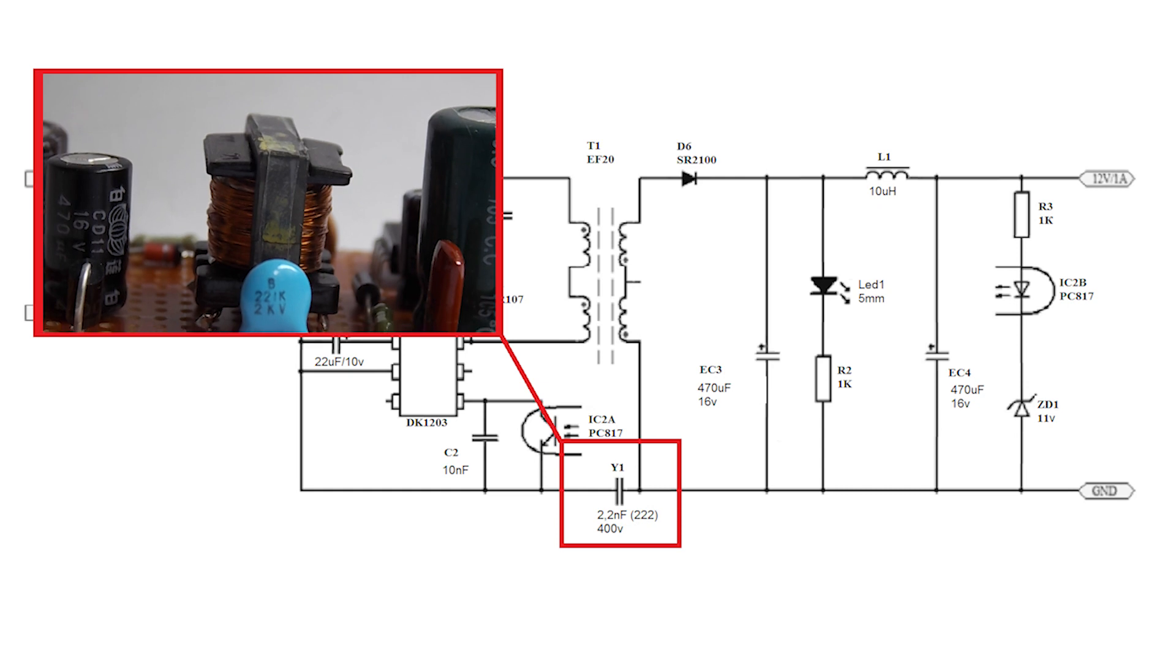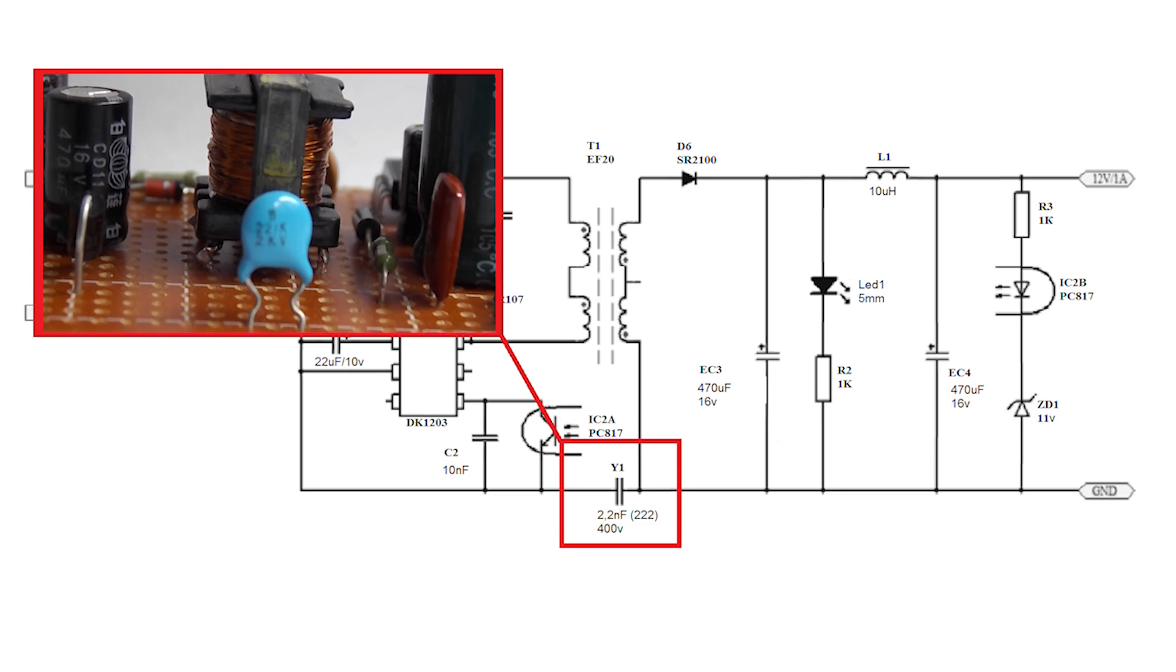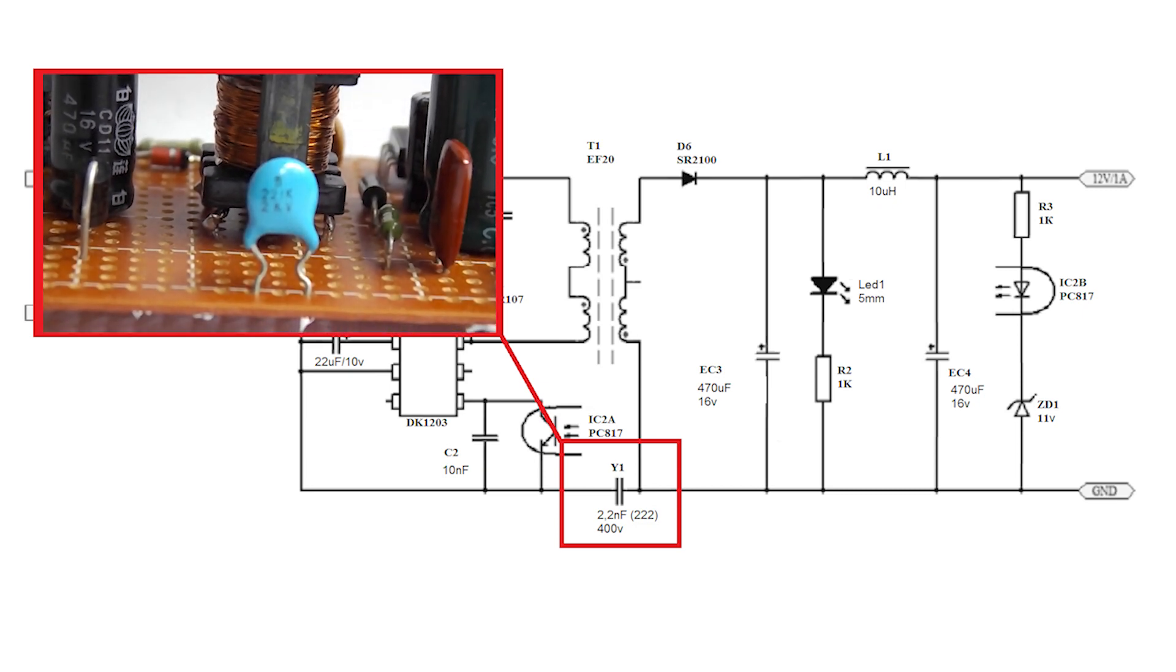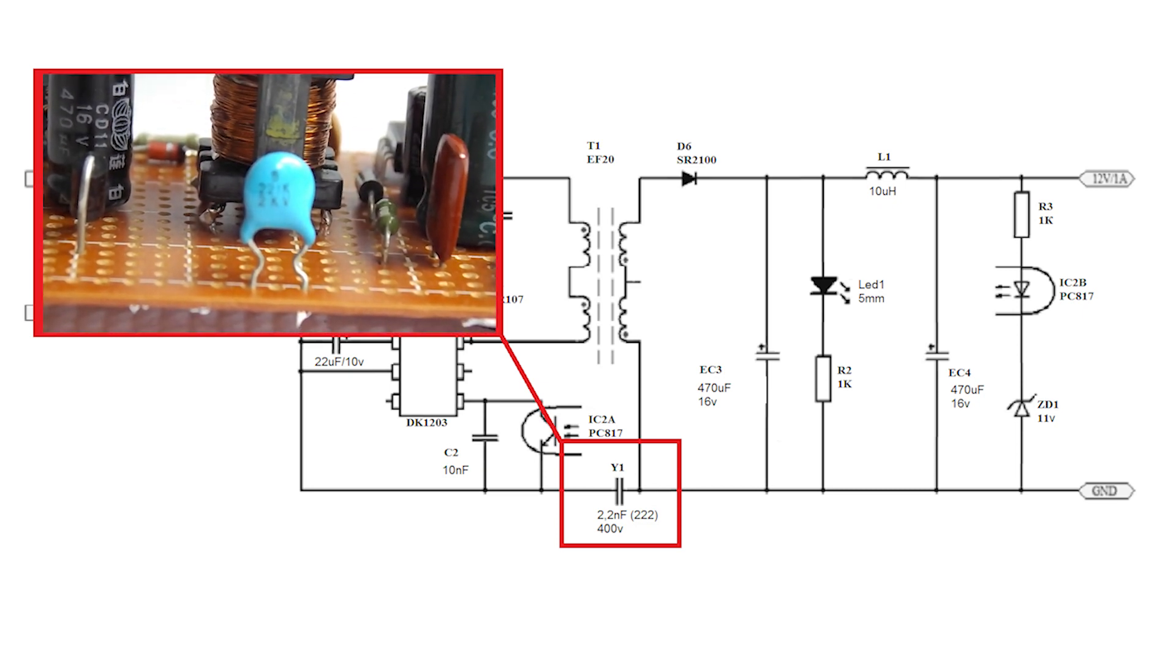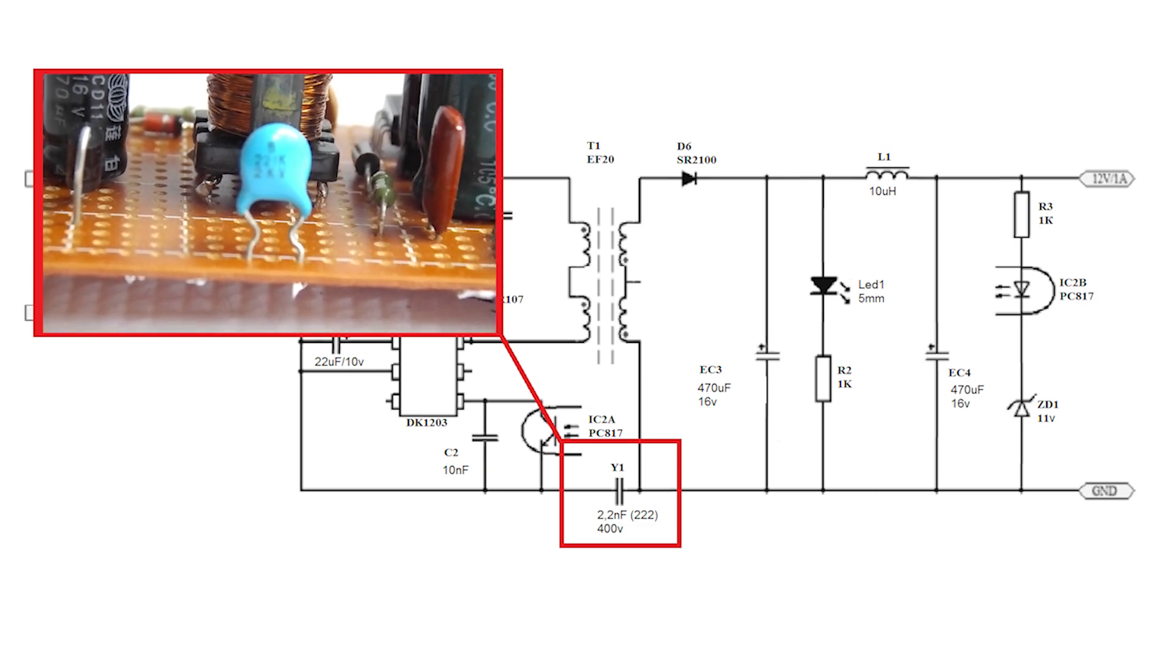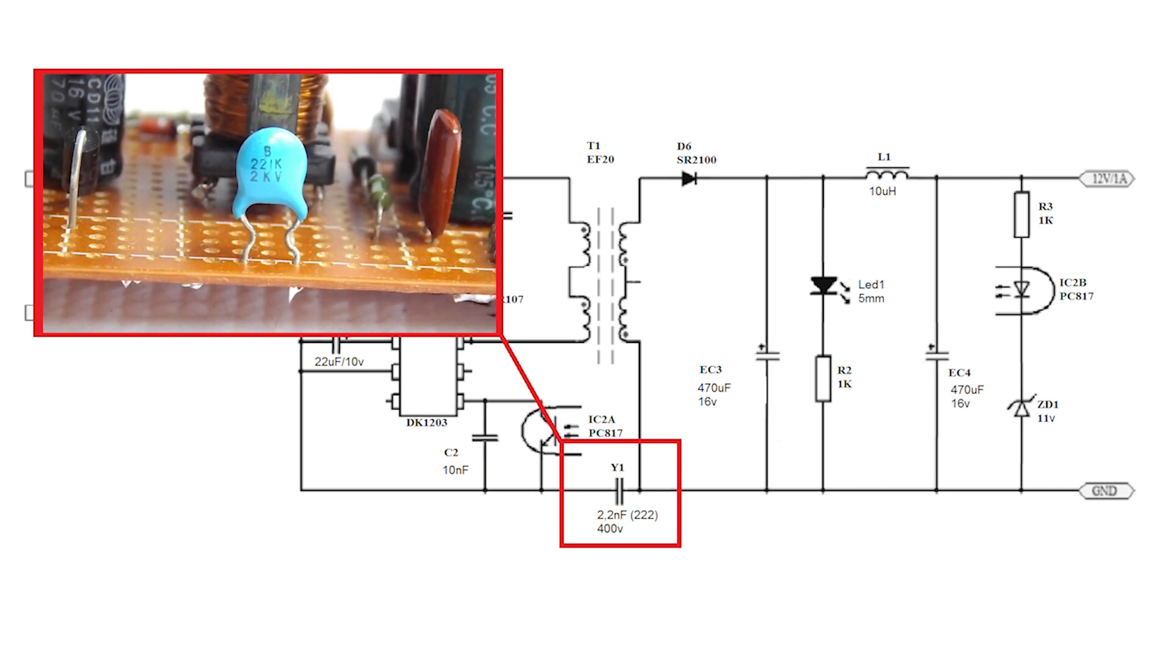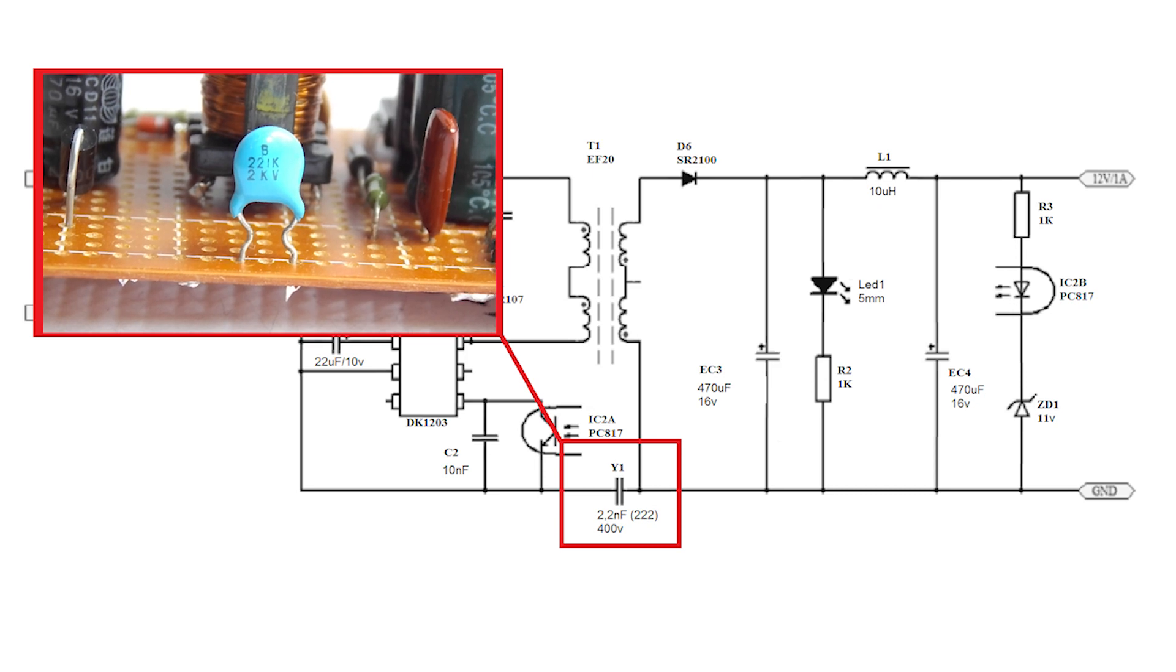Y1 is a 22 nanofarad 400 volt noise suppression capacitor, usually marked 222. I did not find such a capacitor, and I set it to 0.22 nanofarads. It is clear that this capacity is 10 times less than recommended, but this does not affect the output characteristics of the power supply.